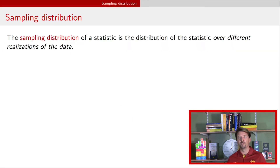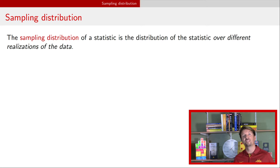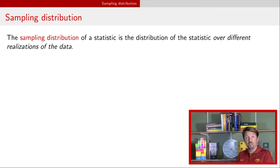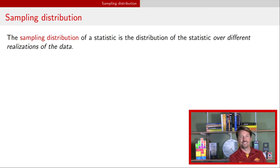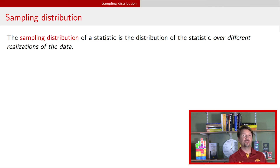A sampling distribution of a statistic is the distribution of that statistic over different realizations of the data. What you want to be thinking about here is having a sample of data, calculating a statistic, and then repeating that process over and over again, and then looking at what the distribution of that statistic is.